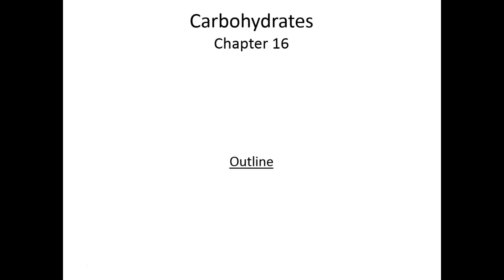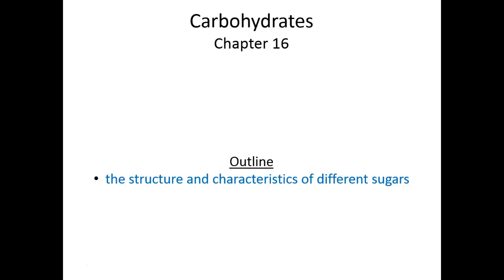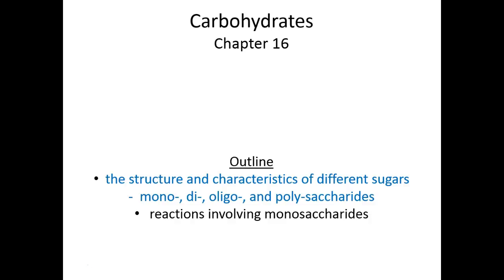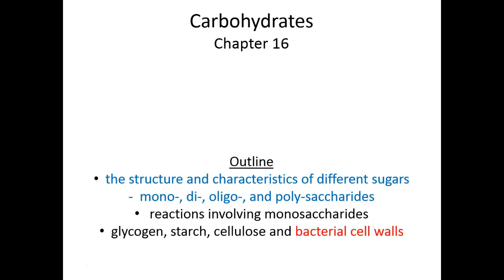There are three chunks to this lecture: 10A, 10B, and 10C, covering chapter 16 from our textbook. In this first chunk, we'll talk about the structure and chemical characteristics of different sugars to give us a strong foundation in carbohydrates, and we'll also talk about more complex carbohydrates such as disaccharides, oligosaccharides, and polysaccharides. In the second and third chunks, we'll discuss monosaccharide chemistry, glycogen as sugar storage for animals, starch for plants, cellulose as a plant cell wall, bacterial cell walls, glycoproteins, and how glycoproteins interact with lectins for important biological processes.